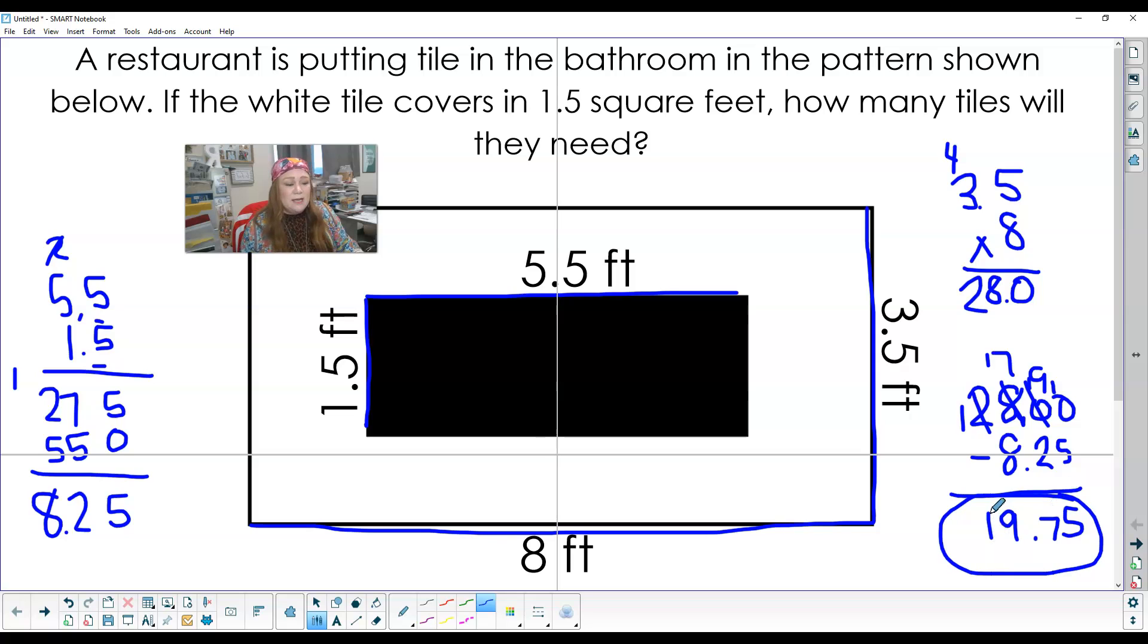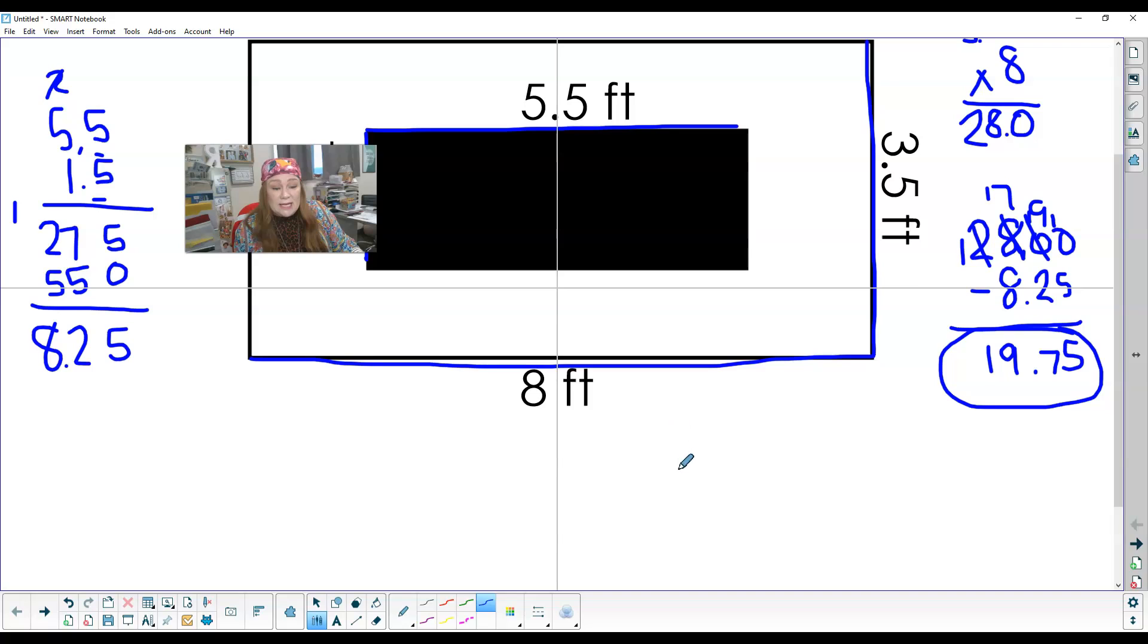So my total white area is 19.75 square feet, and each white tile covers 1.5. So I'm seeing how many 1.5 tiles do I need. So I've got to move my decimal, which is going to move that decimal here, made that 10 times bigger, so I need to make this one also 10 times bigger.